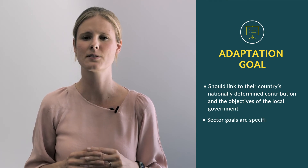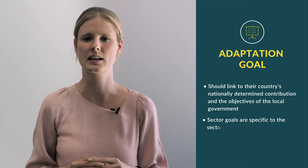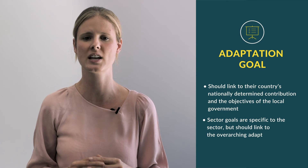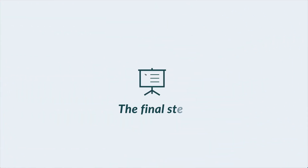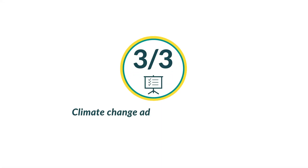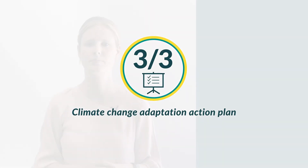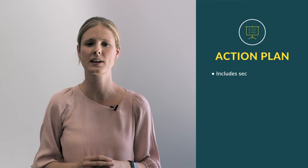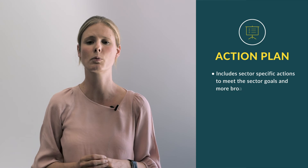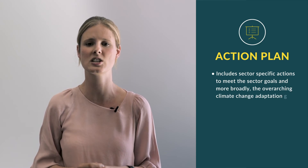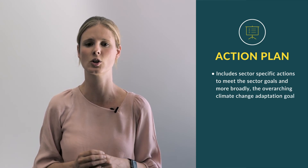Sector goals are specific to the sector, but should link to the overarching adaptation goal. The final step in the adaptation planning process is to develop a climate change adaptation action plan. The action plan includes sector-specific actions to meet the sector goals and, more broadly, the overarching climate change adaptation goal.